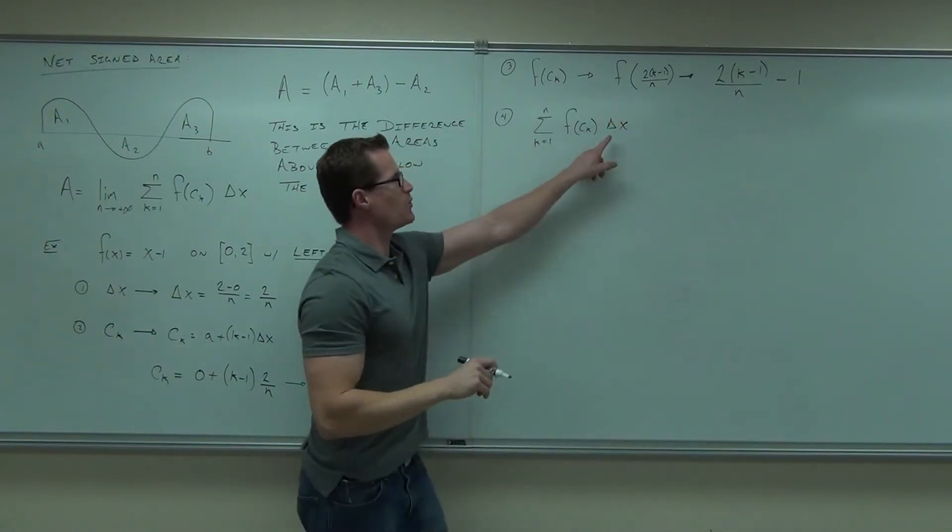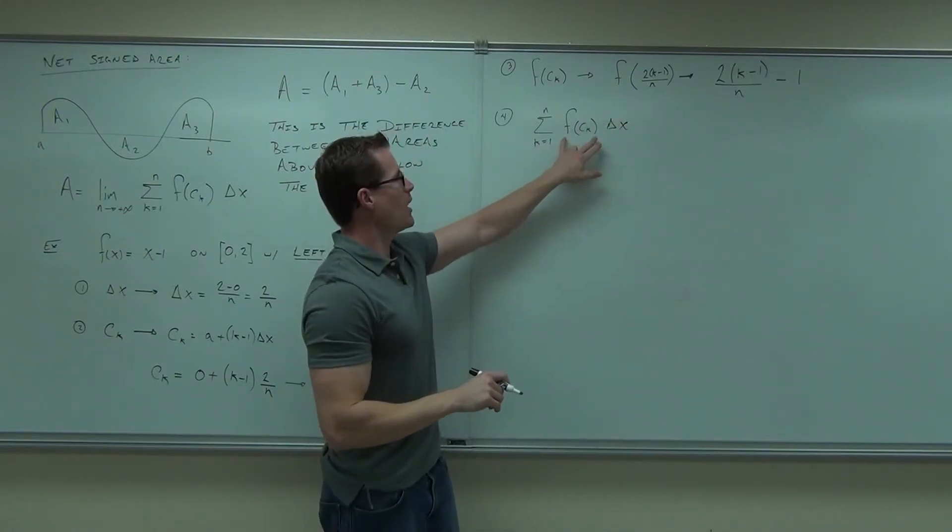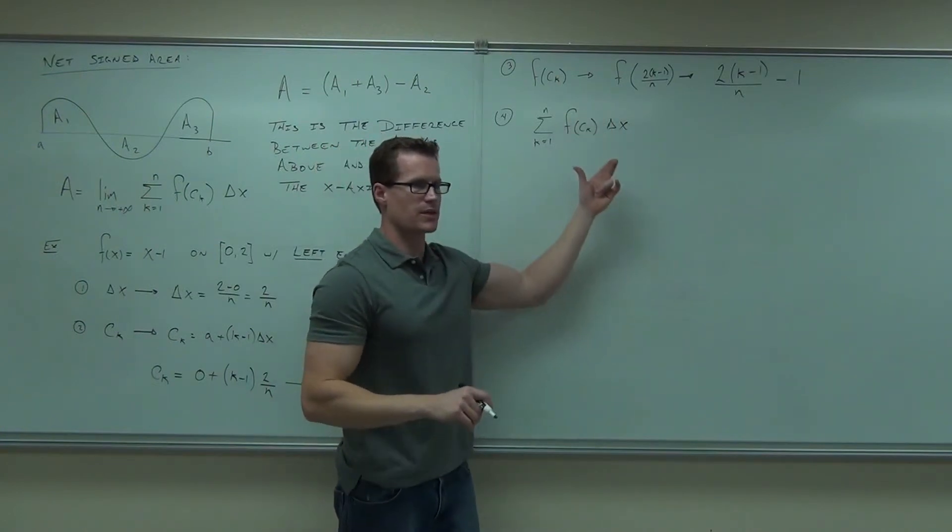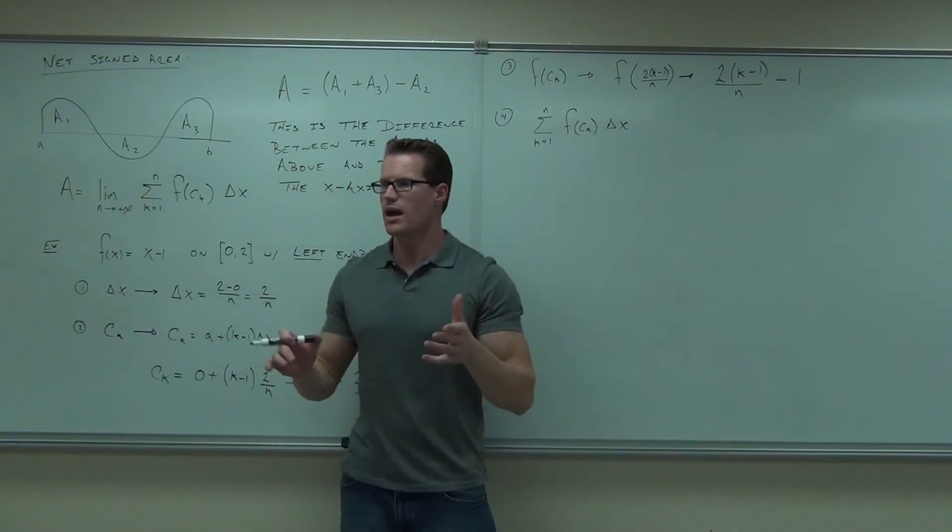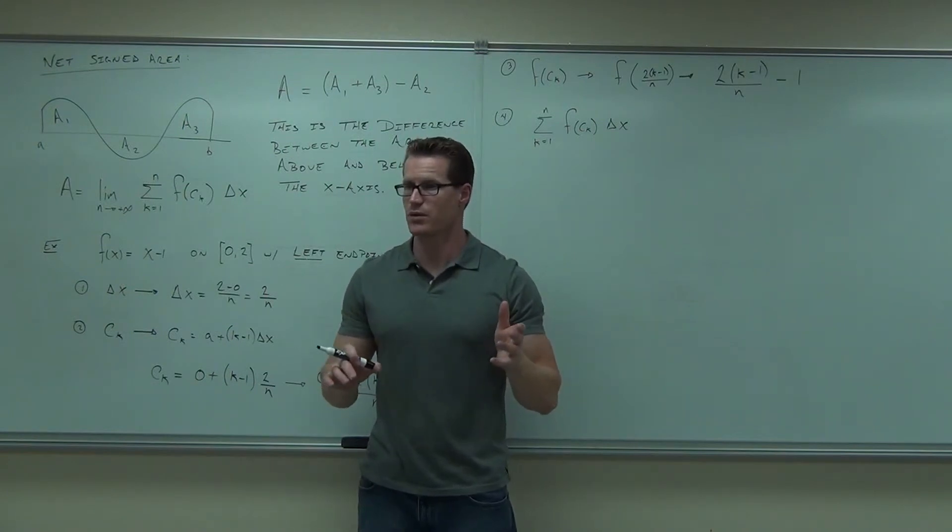You're supposed to make that. You're supposed to say, okay, I know my delta x, I can plug it in. I now have my f(c sub k), I can plug that in, and then we'll take the summation, try to work that on out, and see what we get out of it. I'm not sure if you're okay with that one.